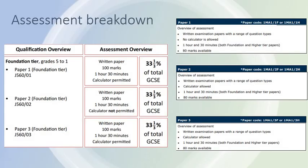At the end of year 11, each child will sit three end of year GCSE Mathematics exams. Two are calculator and one is non-calculator. Each paper makes up 33 and a third percent. Mathematics is solely an exam subject. The major difference between the two tiers is that the foundation paper is 100 marks and the higher paper is 80 marks.